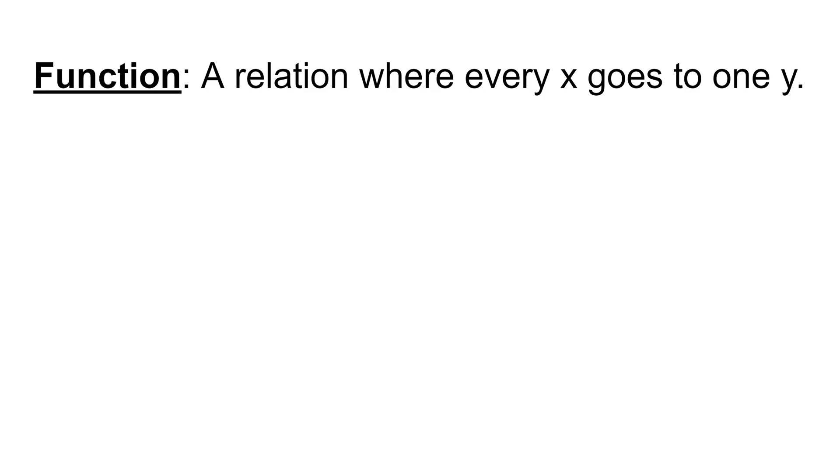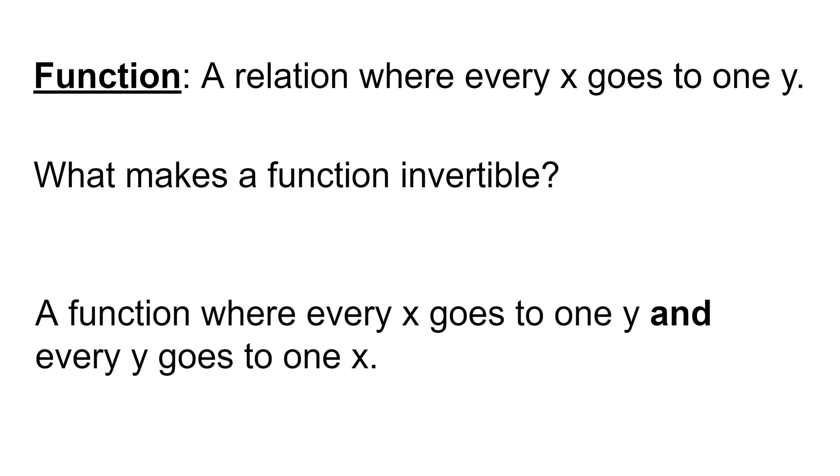So to summarize, we know a function is a relation where every x goes to one y. But what makes a function invertible as we considered in the last slide? Well, in order for a function to be invertible and to pass the horizontal line test I just discussed, it has to be a function where every x goes to one y and every y goes to one x. And that is called a one-to-one function. So only one-to-one functions are invertible.